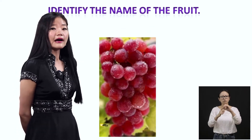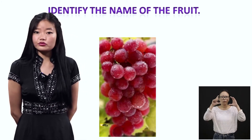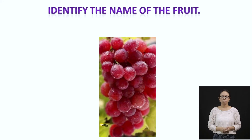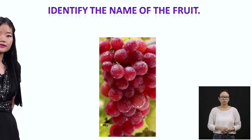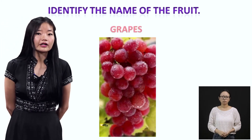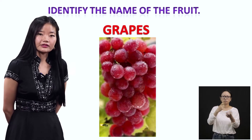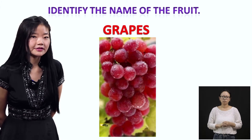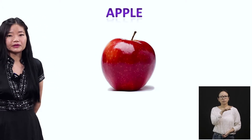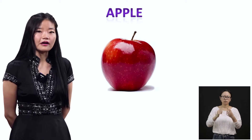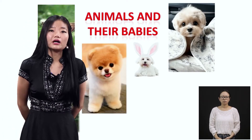The next question is about identifying the name of a given fruit. You see a picture on the screen. It looks fresh and yummy and delicious. This is grapes — G-R-A-P-E-S, grapes. Now the next question: look at the picture. It is red in color, round in shape, and eating this fruit keeps your heart strong and your lungs healthy. This is an apple — A-P-P-L-E. That was all about fruits.